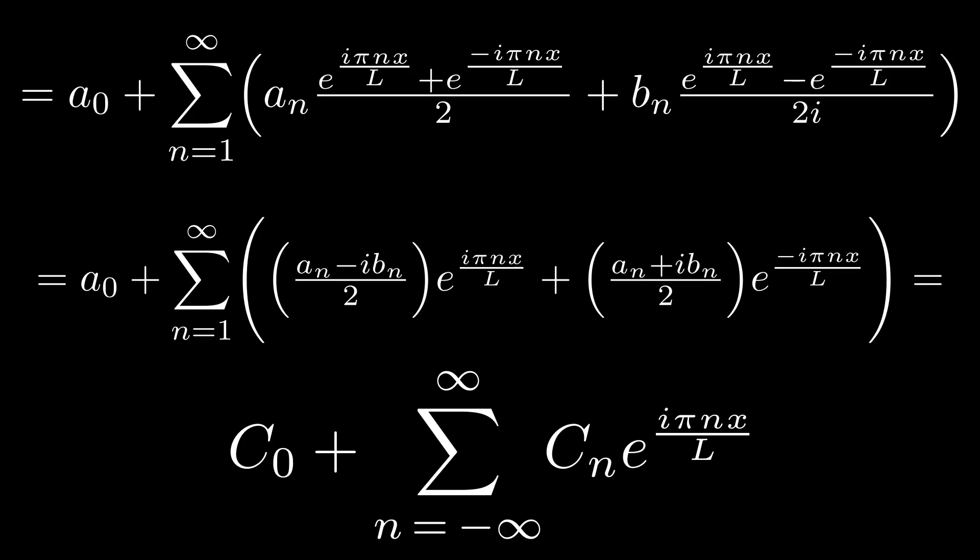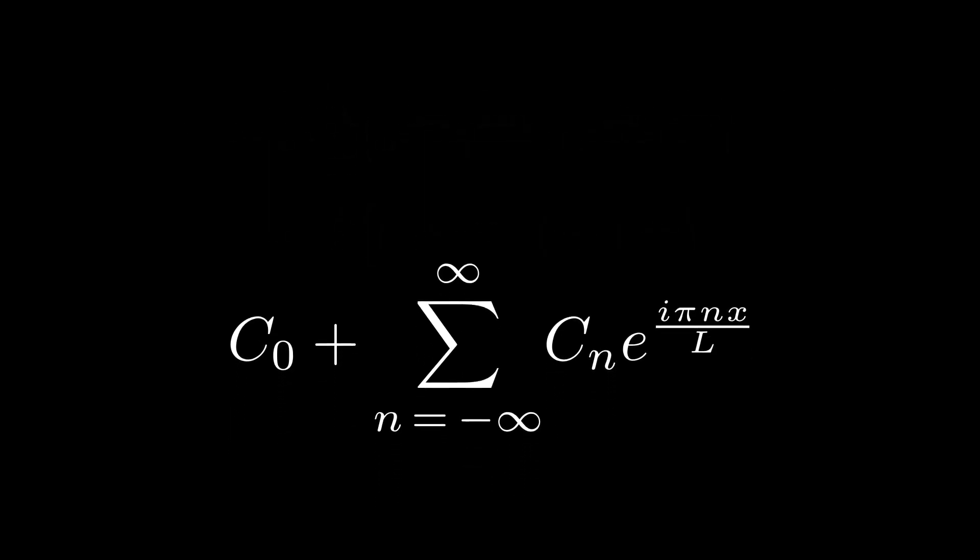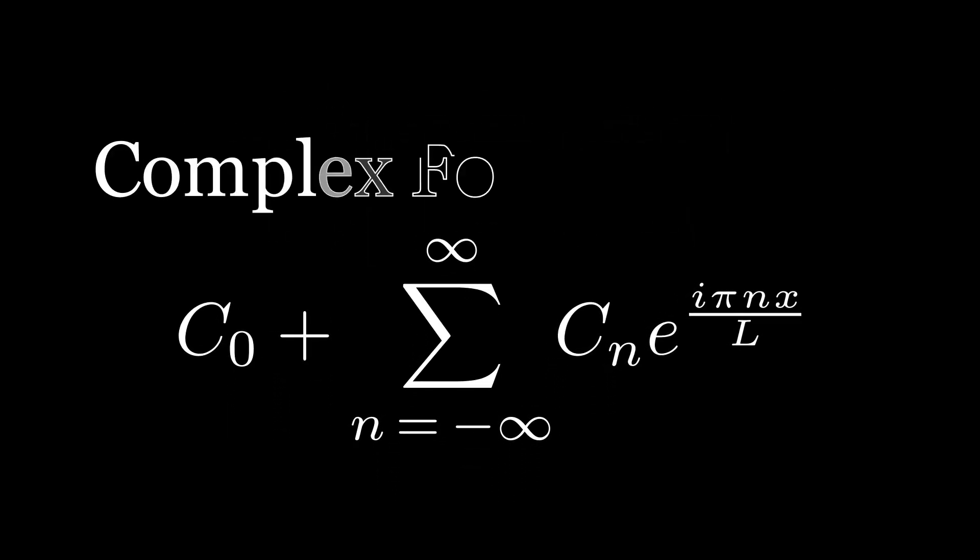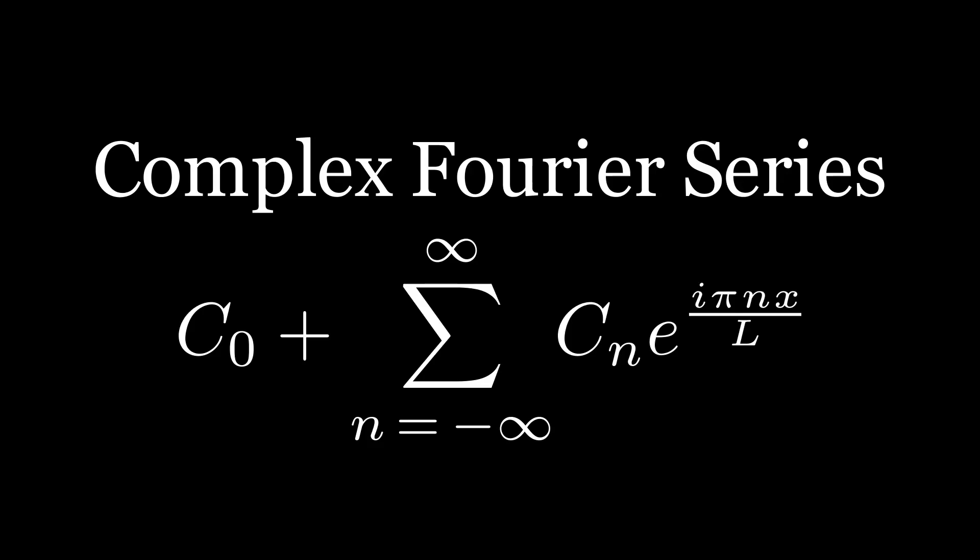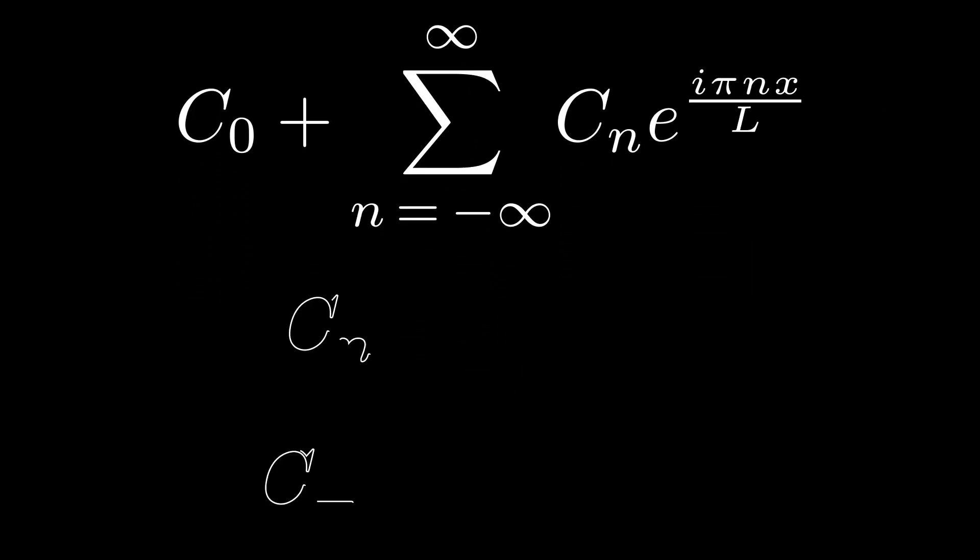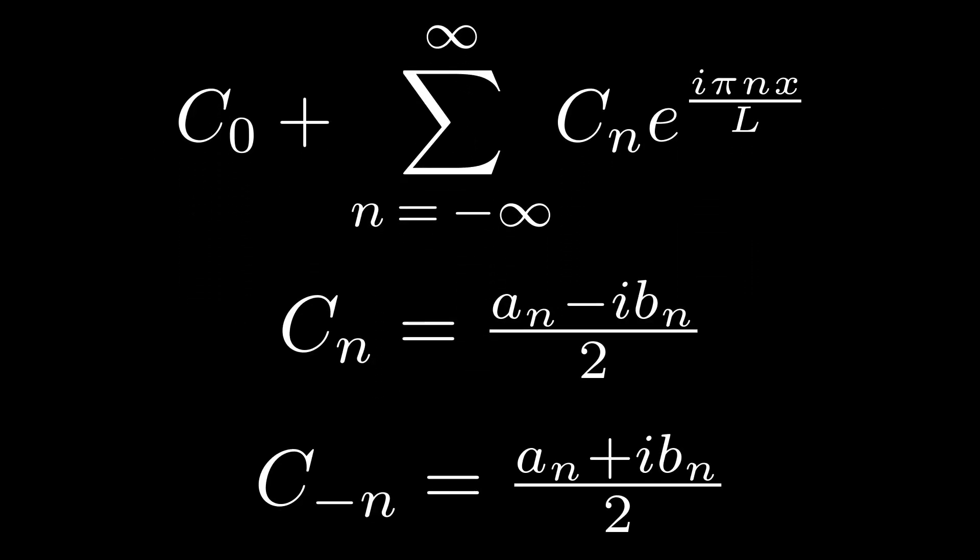We now have a doubly infinite sum, and only one coefficient. This is the complex Fourier series. Remember that this is a doubly infinite sum, going from minus infinity to positive infinity, and c sub n is the complex conjugate of c sub minus n. Again, the sum is real when we add these conjugates.